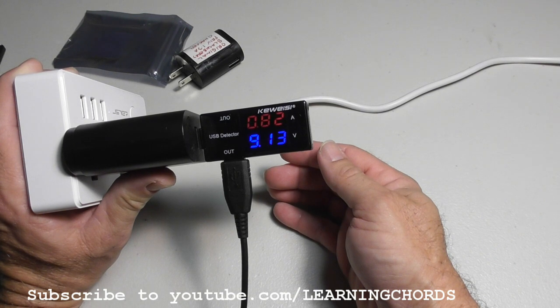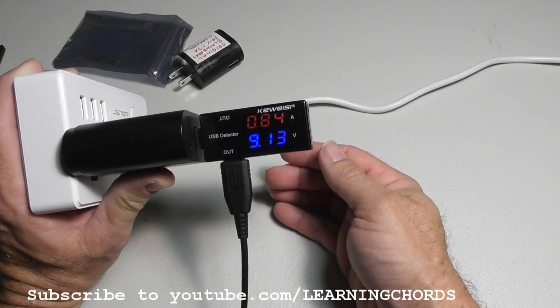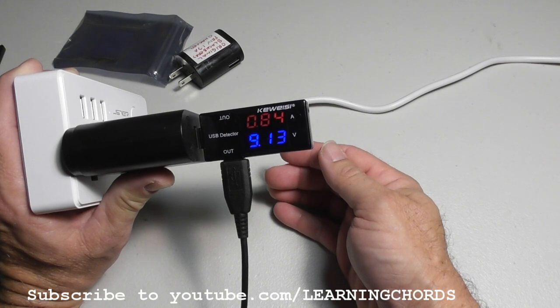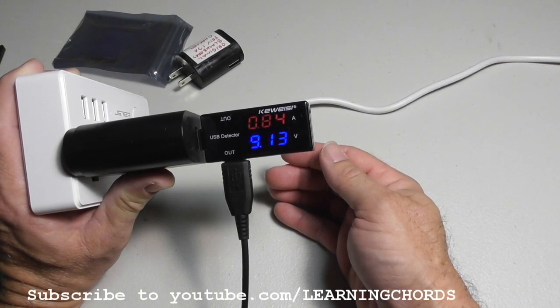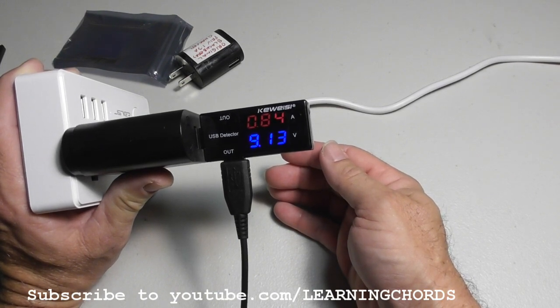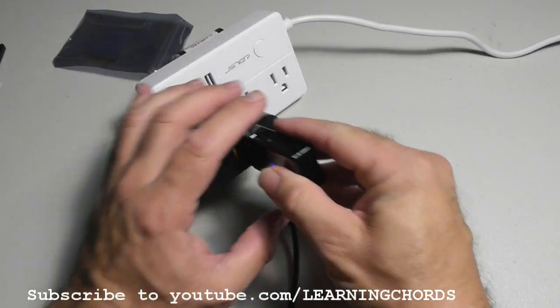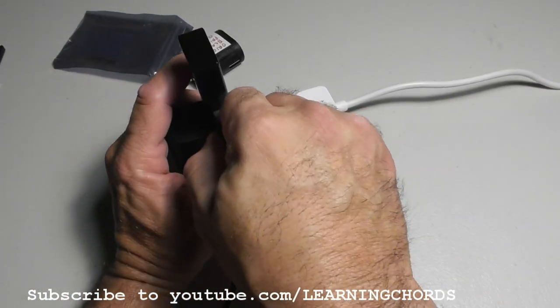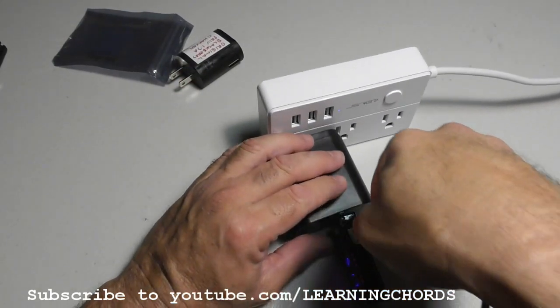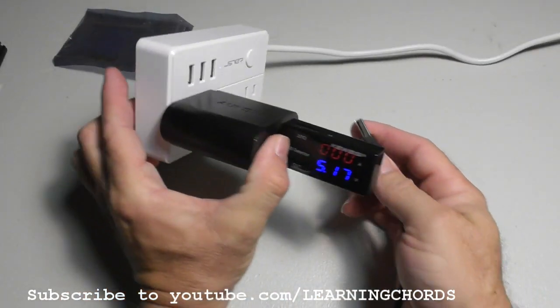So it looks like we've got nine volts popping out of here at I'm assuming that's 0.84 amps. I thought this was a three amp charger, that's why I'm kind of not really sure why we're getting that. I'm going to plug this in on the other side. We should get the exact same reading.